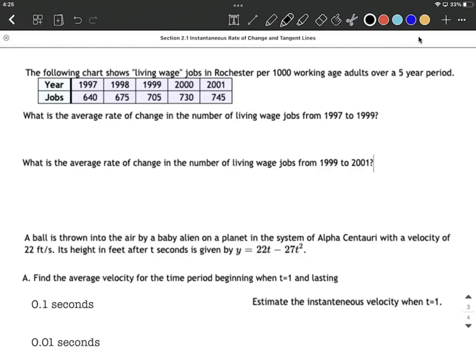Reading our chart here, I'm going to be looking at 1997 and 1999, which are the ones we care about. Average rate of change is equivalent to finding the slope of a line. Let's use y2 minus y1 over x2 minus x1 as we do this.